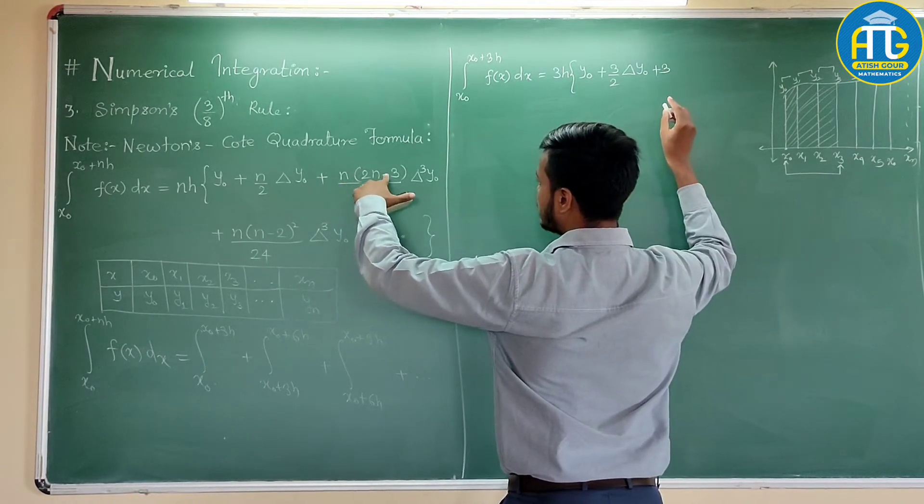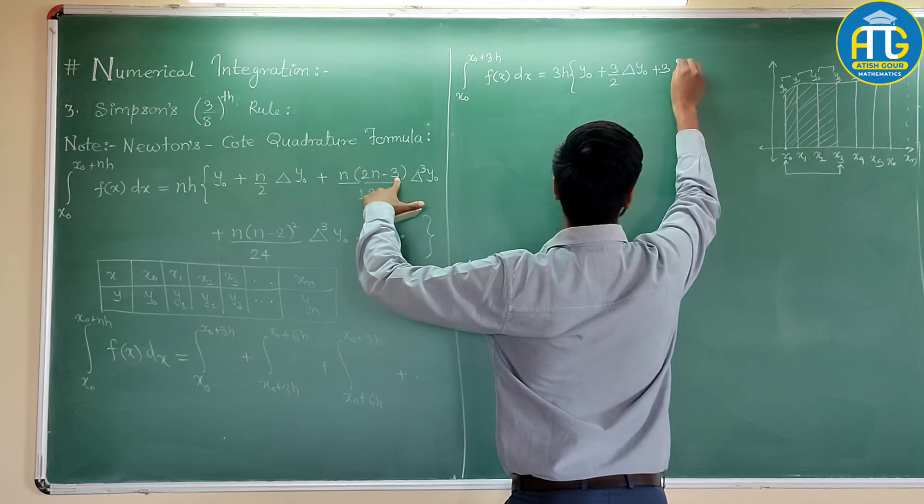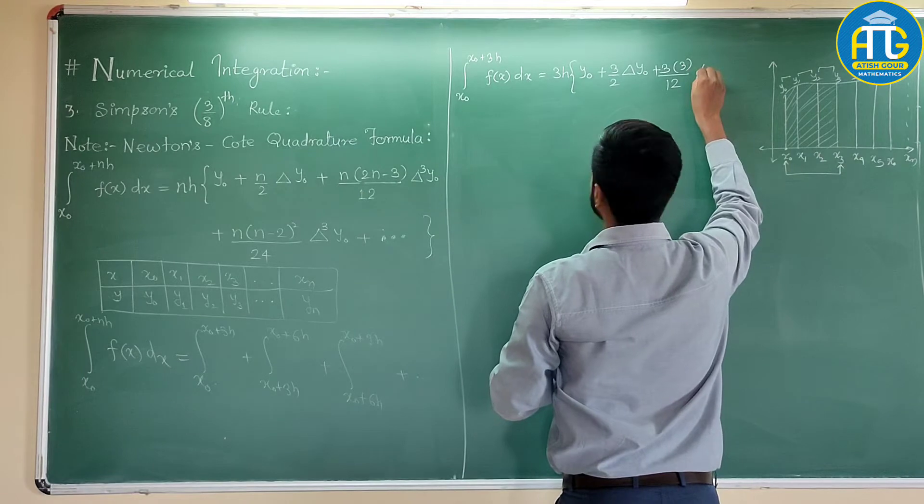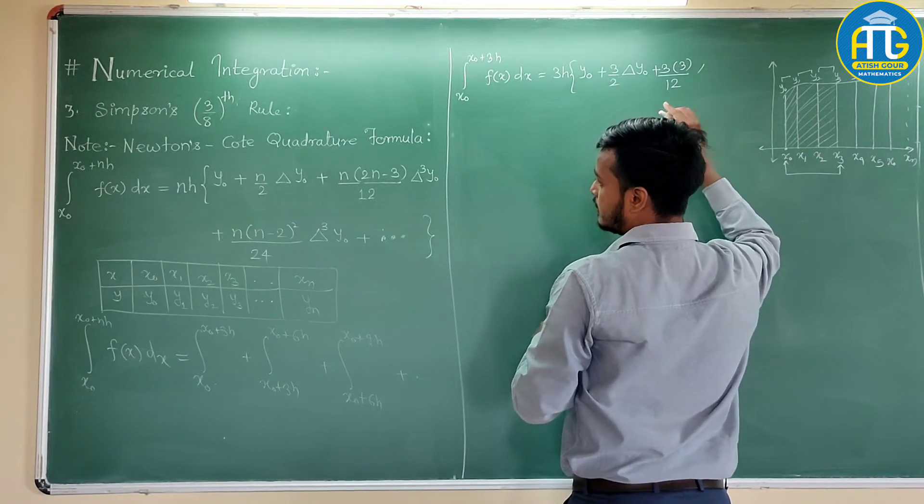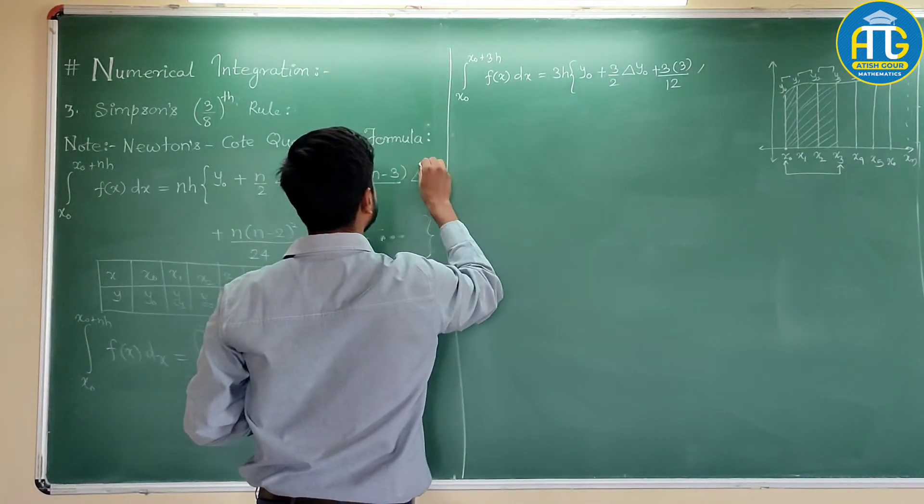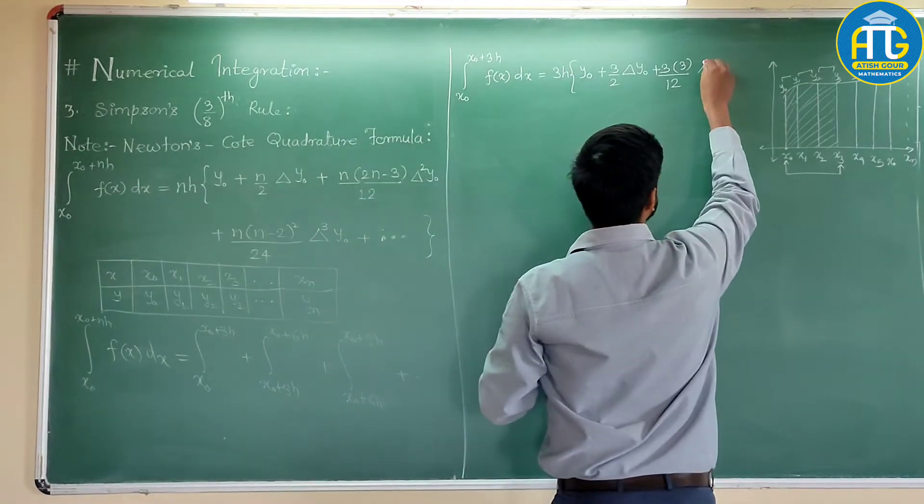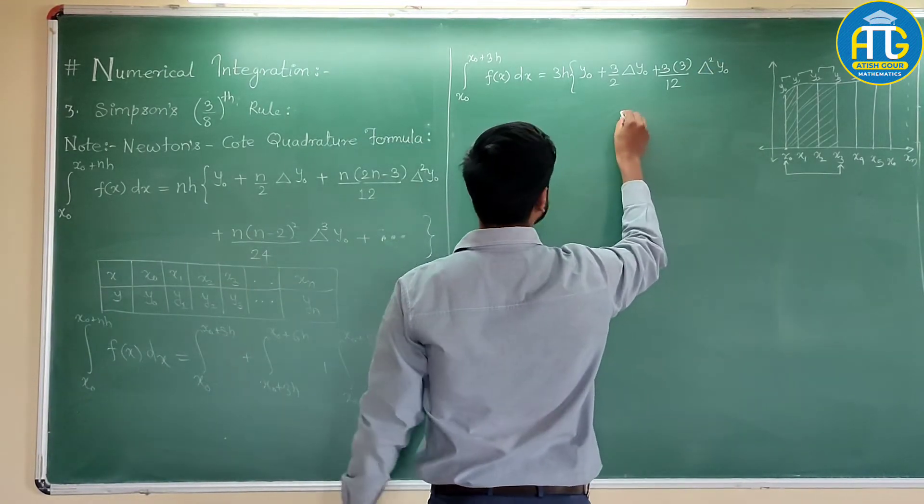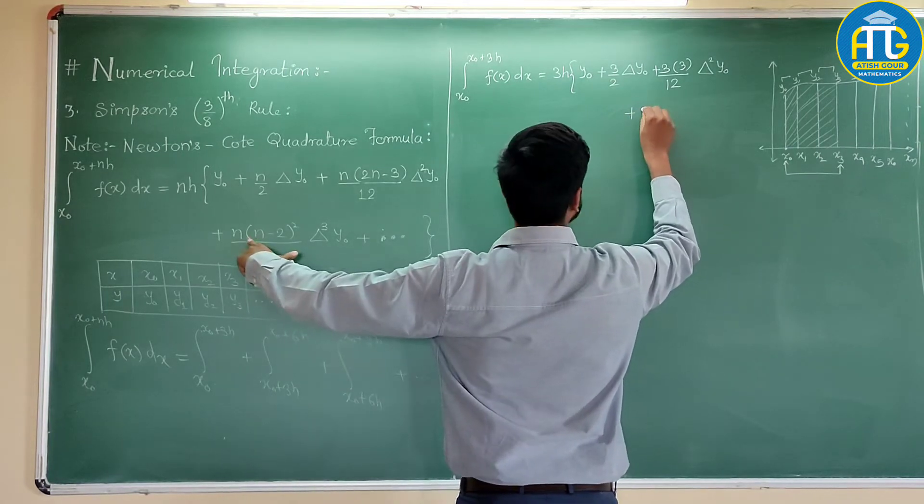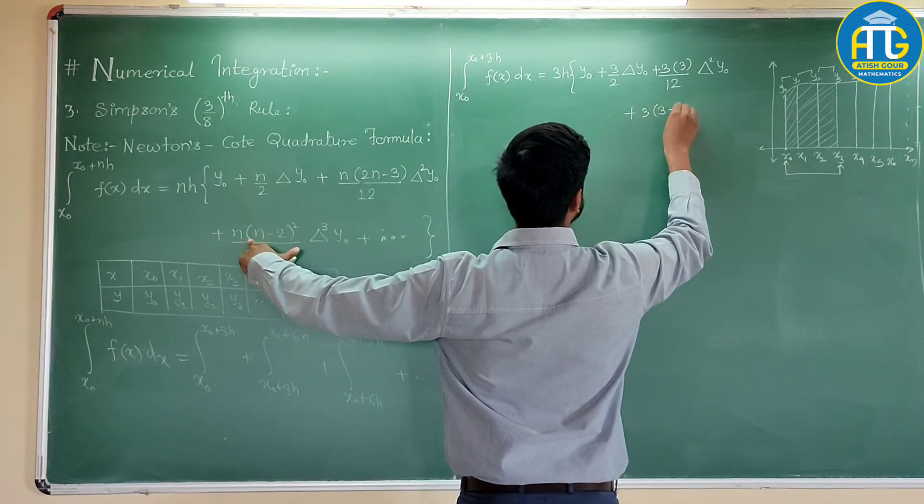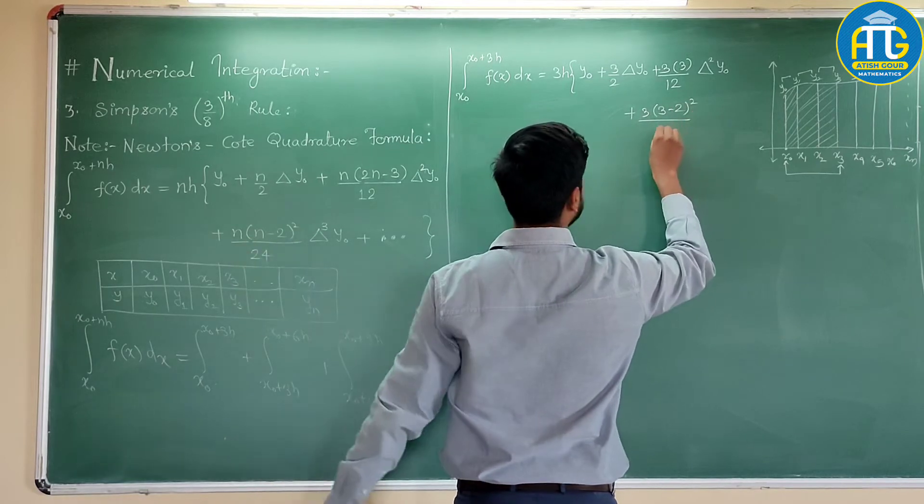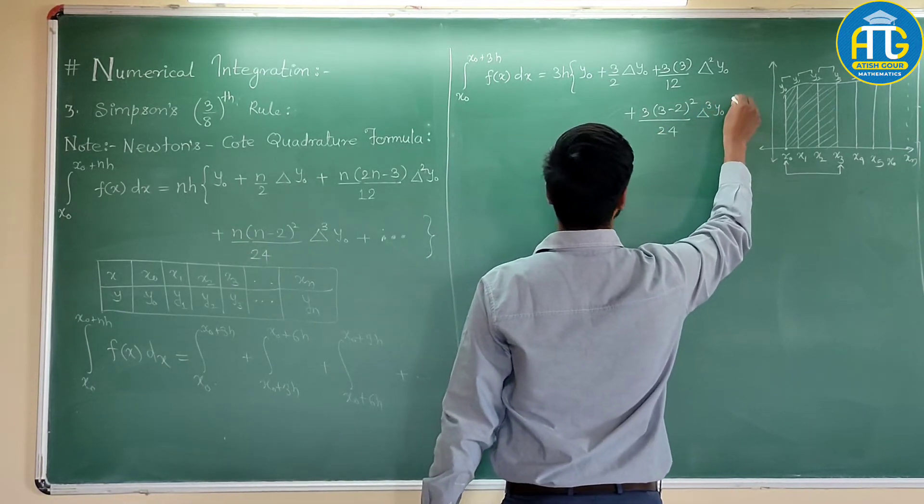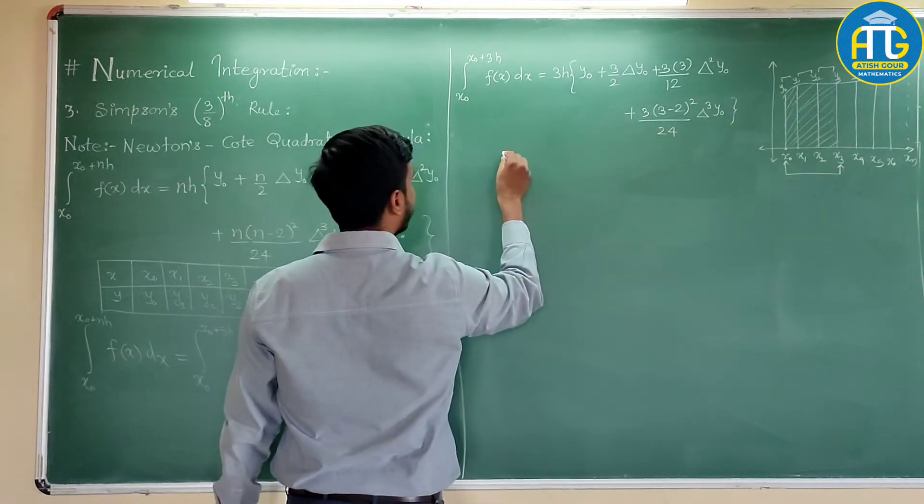This 3 times 2 are 6 minus 3 is 3 by 12 del, this is del squared. Del squared of y0, and then we have 3 into (3 minus 2) squared by 24 del cubed of y0. No need to write down further terms.